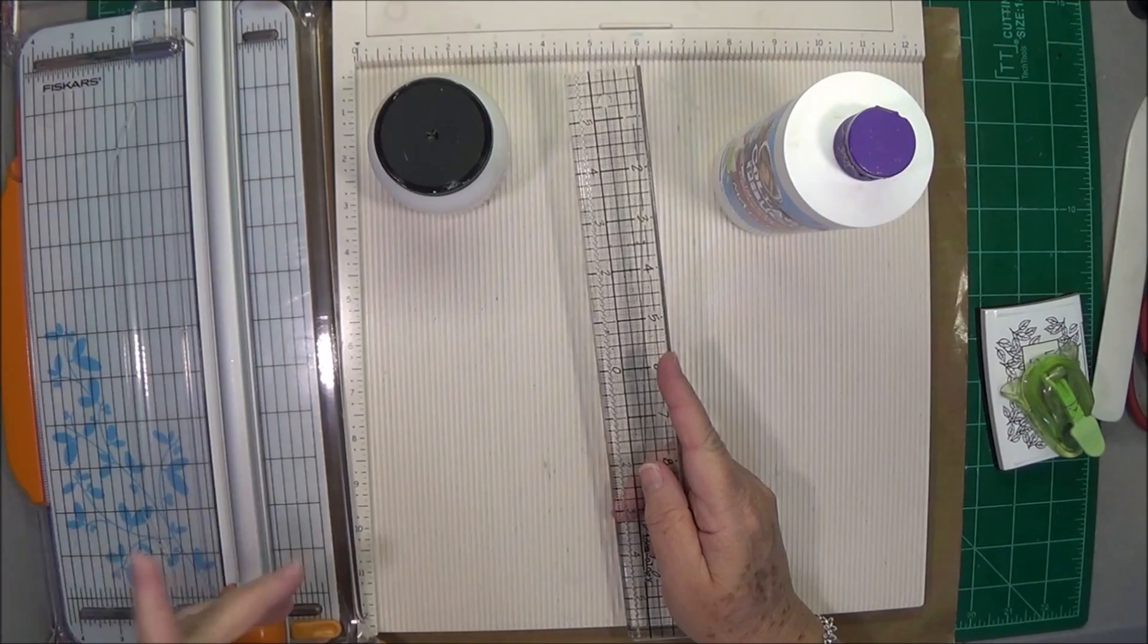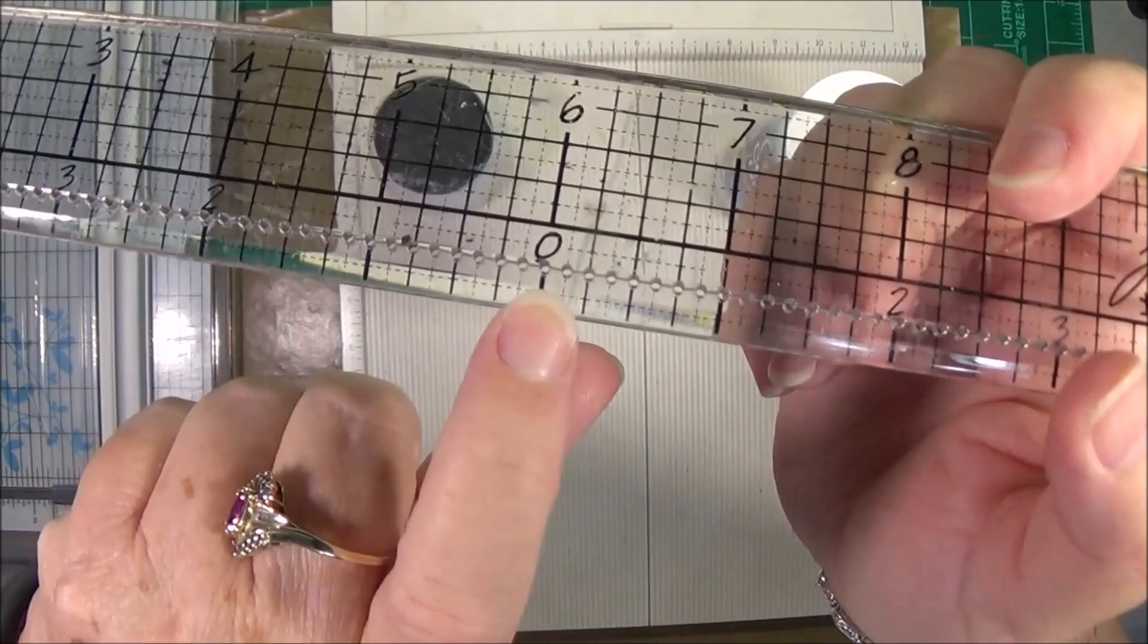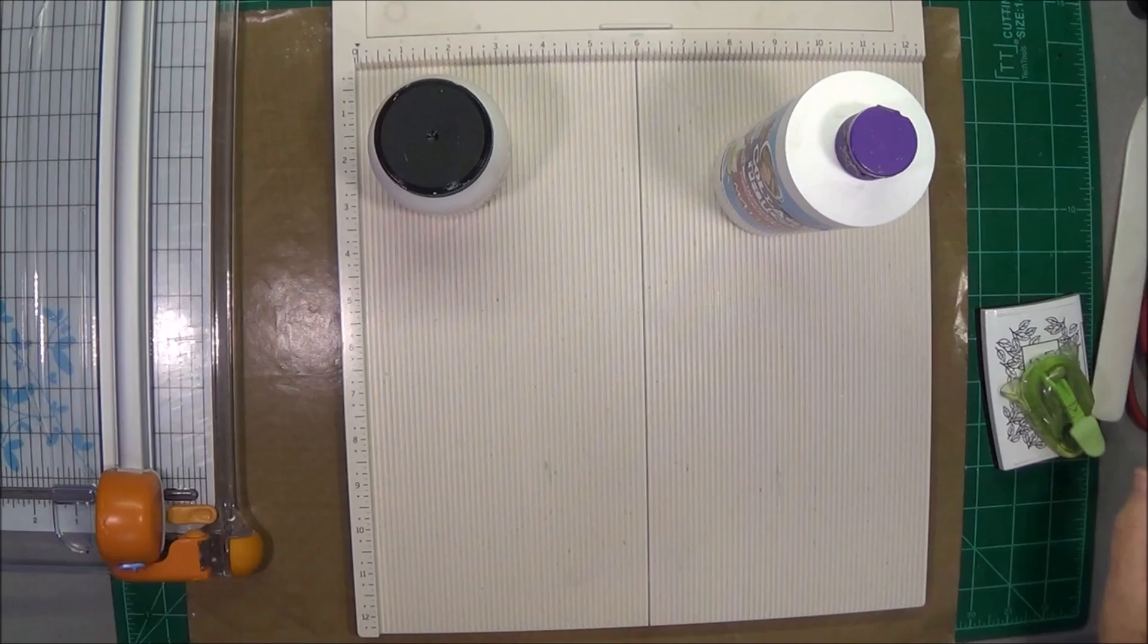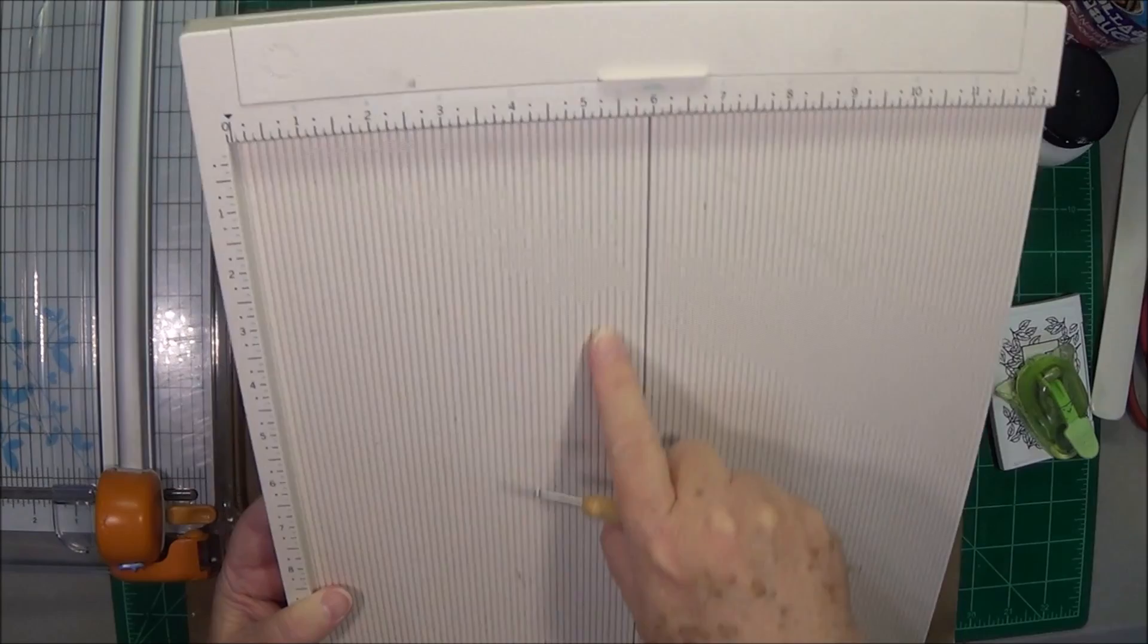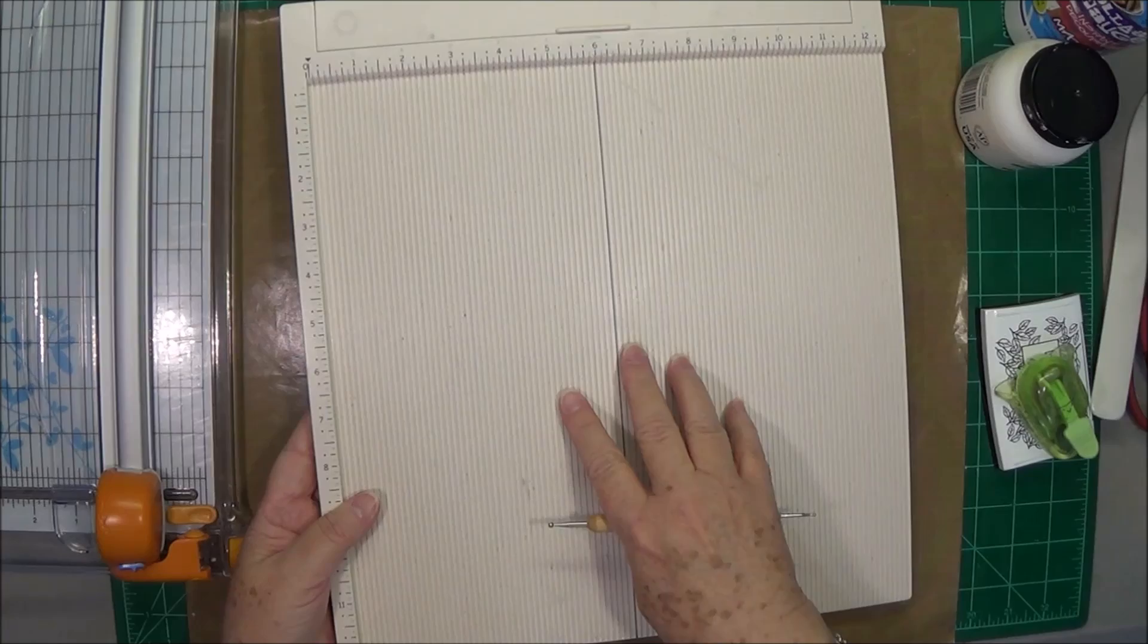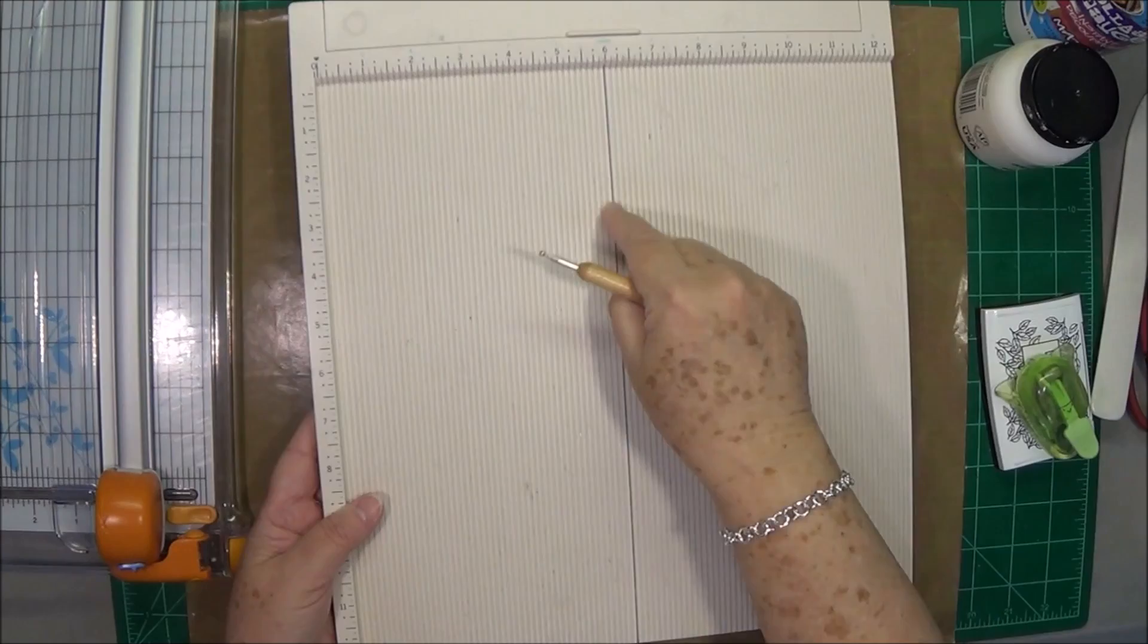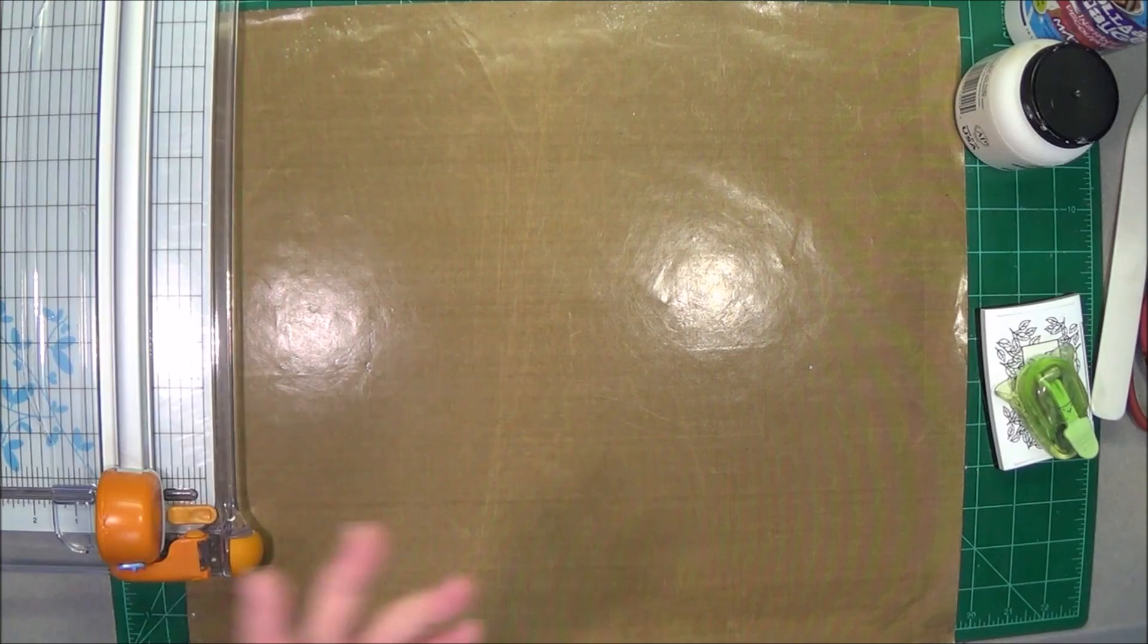My Tim Holtz ruler. Absolutely love it. Has that little center zero there that you can use. This is wonderful. Let's see. My stylus and my, this is a Martha Stewart scoreboard. I love it. Love the big one. I don't use the little one. I love the big one, but I use this stylus with it. It has the different ends on it. Love those two items. And I'm not going in order anymore. I'm just spitting them out there.